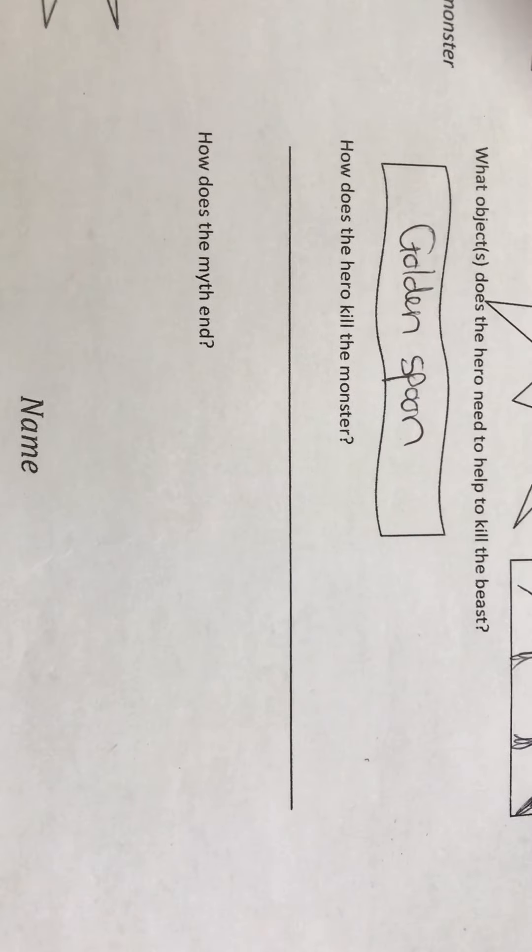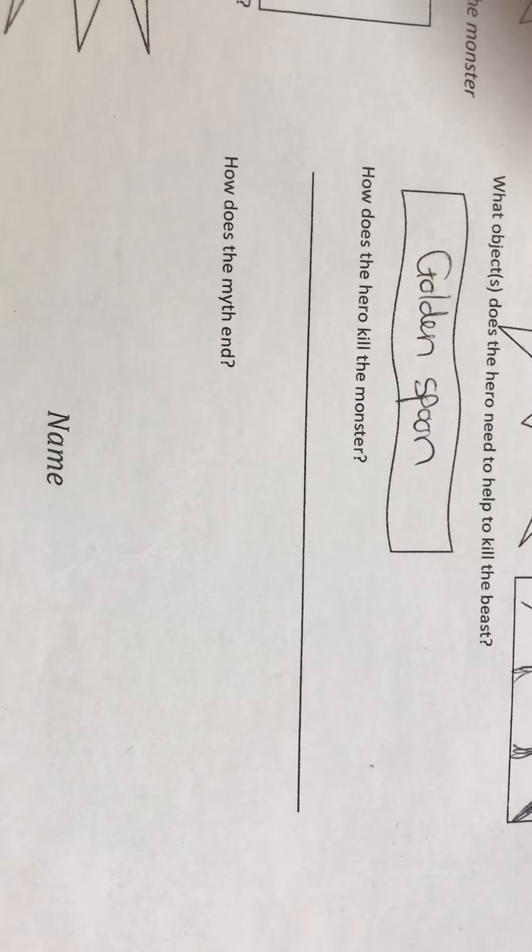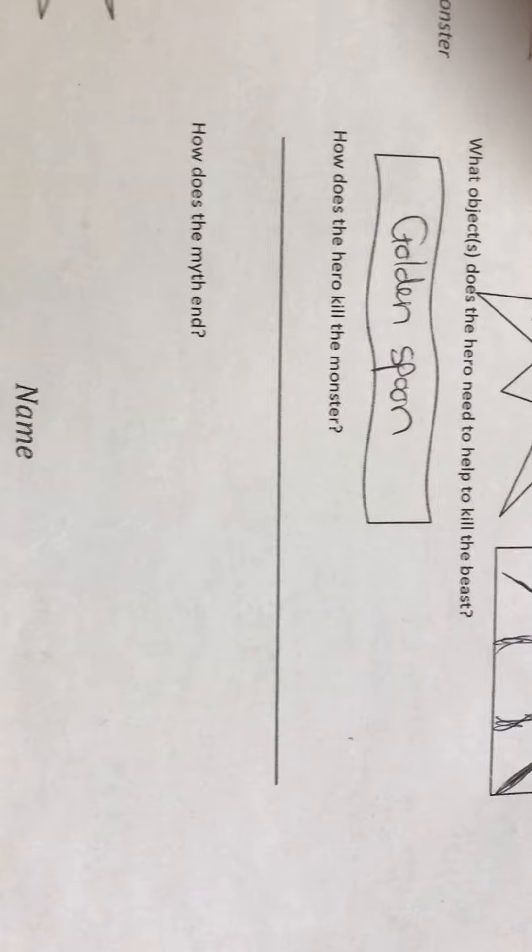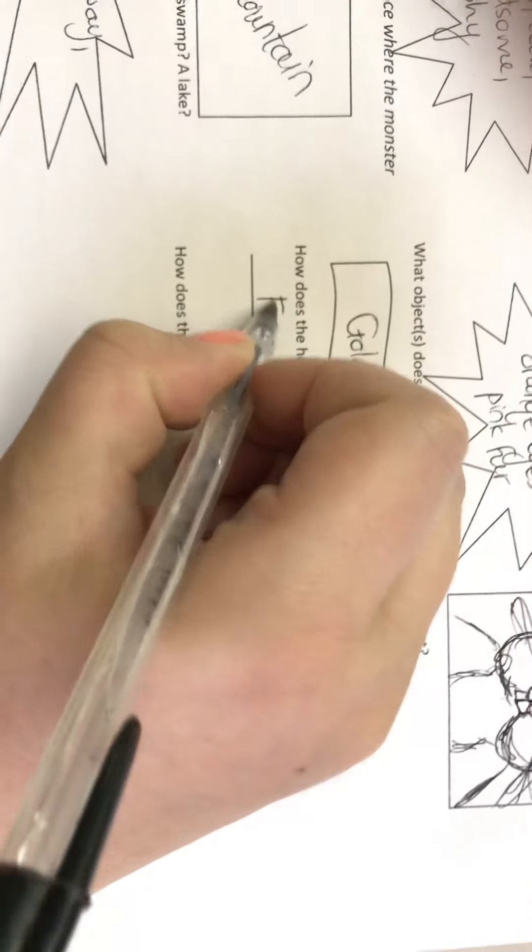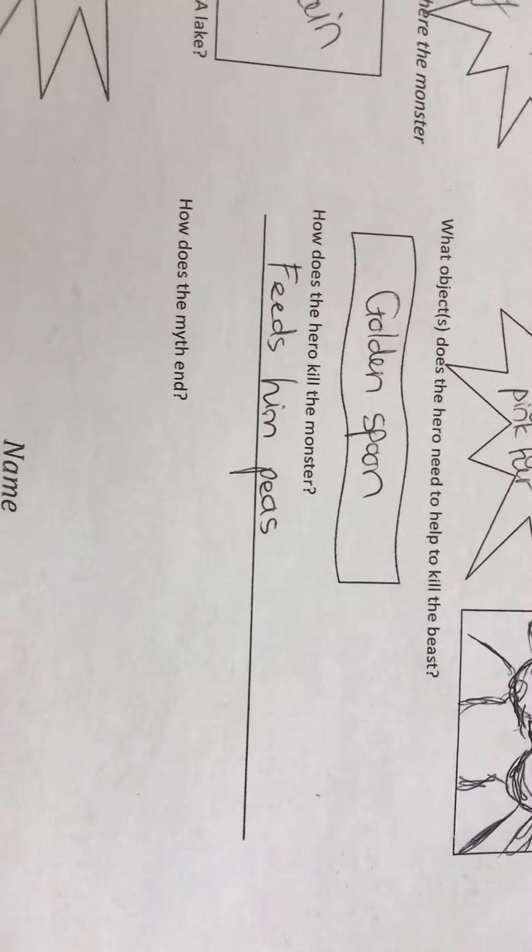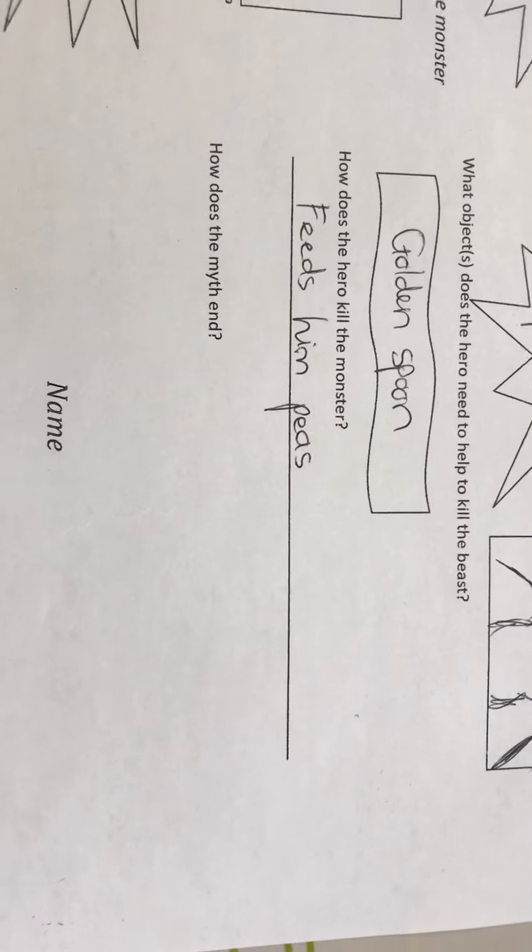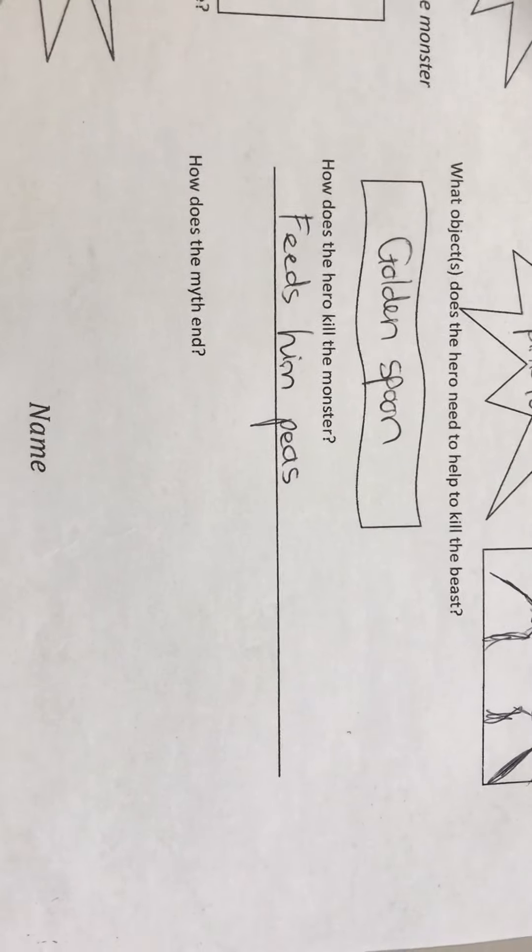And how does the hero kill the monster? Please don't be too explicit because you are still children and I don't want anything too disturbing here. But I'm going to say he feeds him peas. Peas are disgusting. I don't know if you guys like peas. Everybody's taste is different, but me, I cannot eat peas at all. I hate peas. So my hero Mykunos kills the Rab Cat with a golden spoon by feeding him peas.